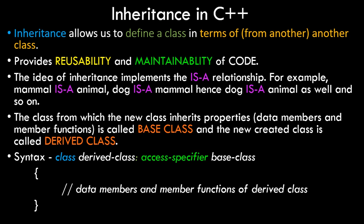Starting with the basic theory — as the name suggests, inheritance allows us to define a class in terms of another class, which essentially means you can create a class using another class. This provides two major advantages to programmers: reusability and maintainability of code. Since you are creating a class using another class, you don't have to type in all the data members and member functions again — you're essentially copying and pasting the properties of that class into your new class.